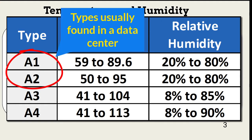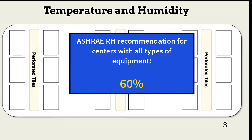In addition to cooling, data center humidity must also be controlled. Humidity levels are also determined by the types of equipment present. ASHRAE recommends a relative humidity of about 60% to address all types of equipment.